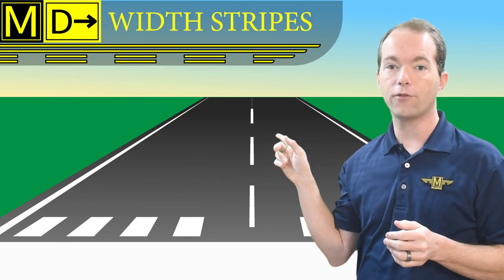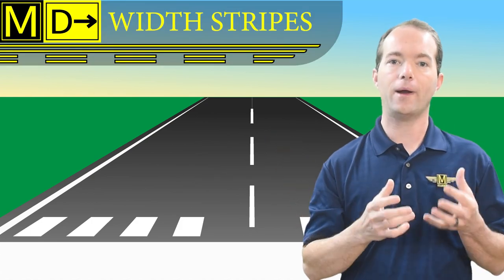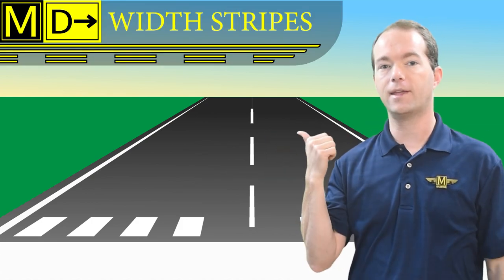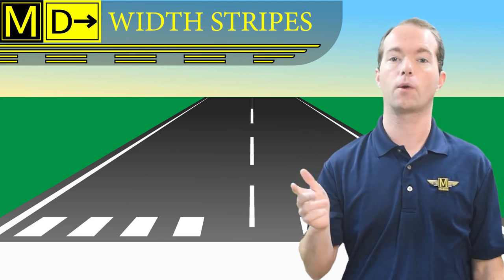Next to the fat white threshold bar, you might see a bunch of parallel white dashes, and these indicate the width of the runway. There's no linear relationship between the runway width and the number of stripes though — it goes from four stripes at 60 feet to 16 stripes at 200 feet, and of course more stripes the wider the runway.